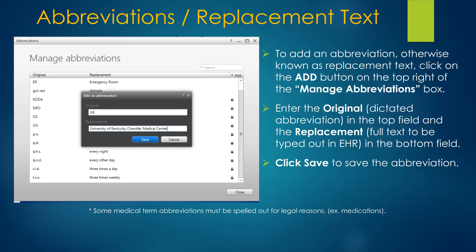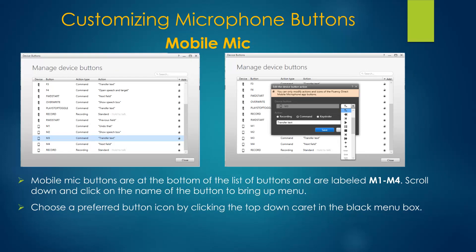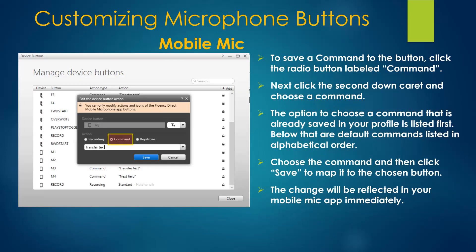Click Save when done. You can map the buttons on your device to your liking through Device Button Mappings on the menu. Note that it is best to not use the tilde key on your keyboard while in Fluency Direct — it will turn on the computer's built-in microphone. Scroll down to the four mobile mic buttons, M1 through M4. Click on the name of the button you wish to map, select an icon from the list, click the Command radio button, and pick a command from the drop-down. Then click Save.